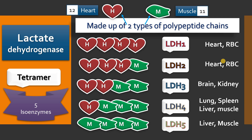You need to remember that LDH1 and LDH2 are mainly present in the heart and RBCs, whereas LDH4 and LDH5 are mainly present in the liver and skeletal muscle. The intermediate type, LDH3, is present in the brain, kidney, spleen, pancreas, and other tissues.